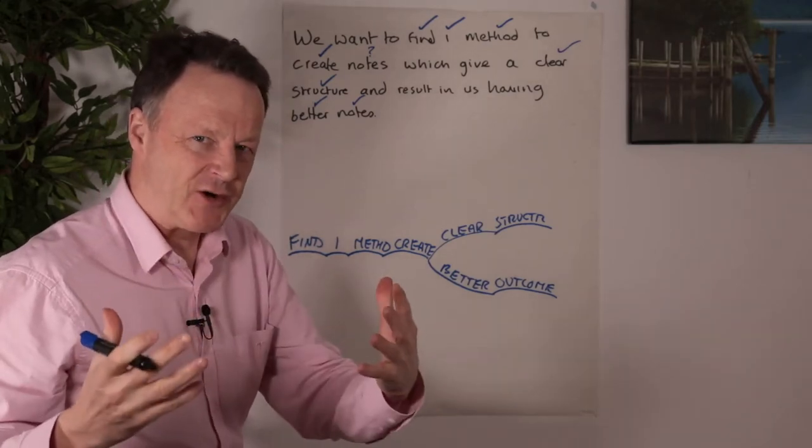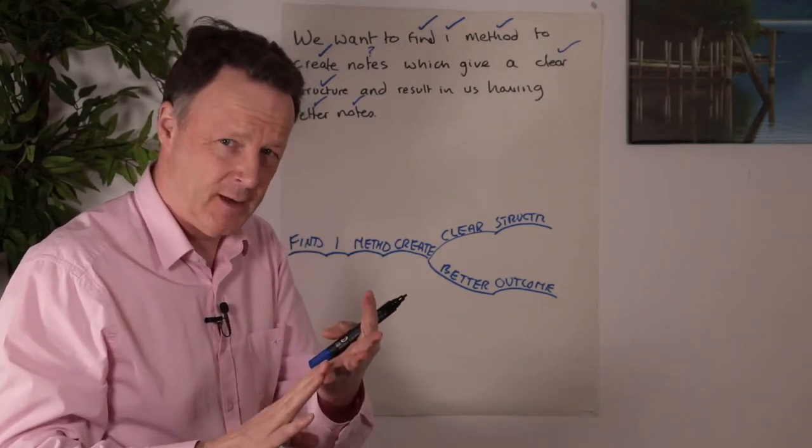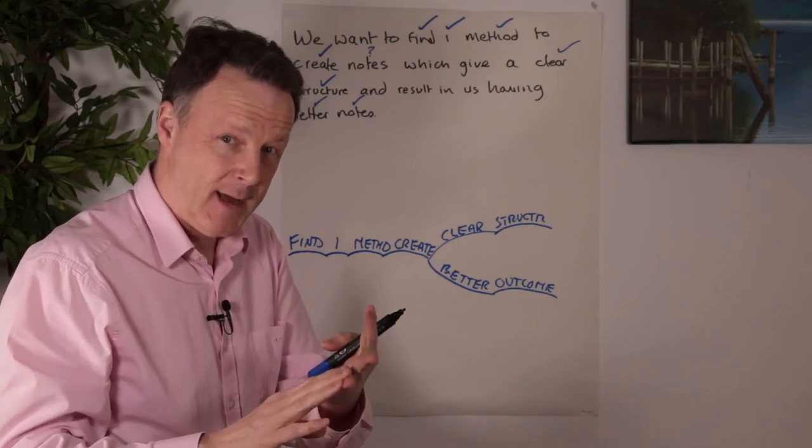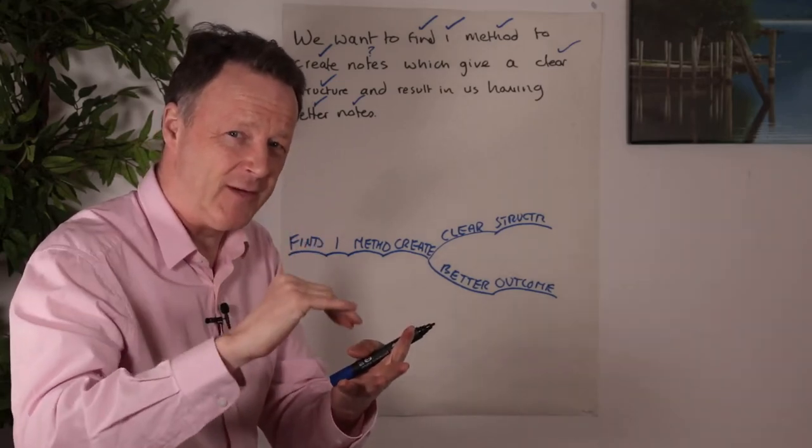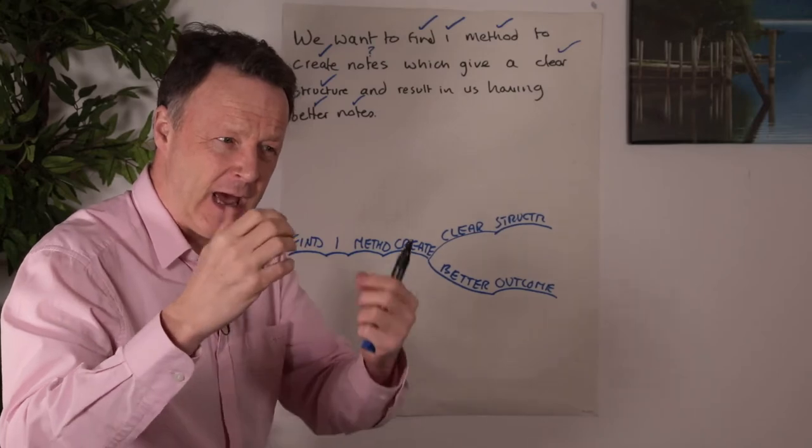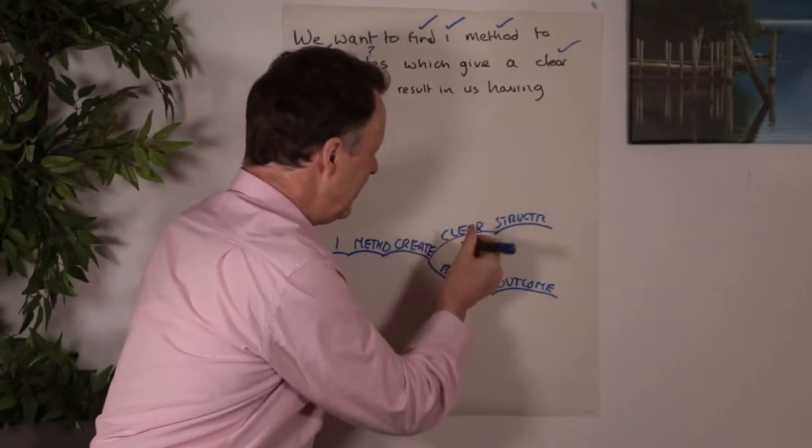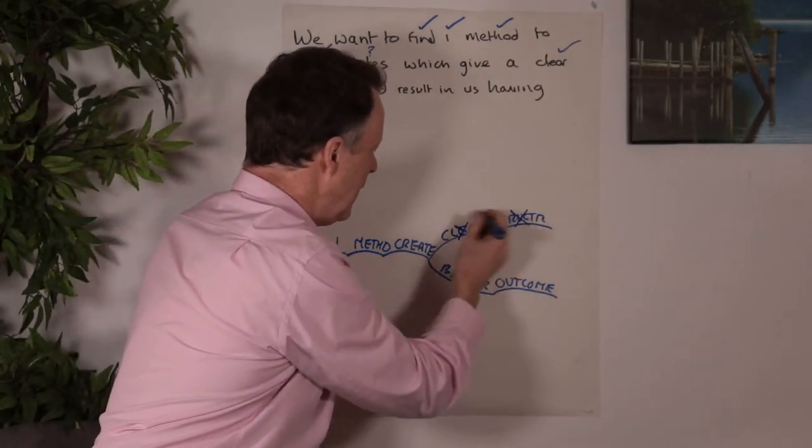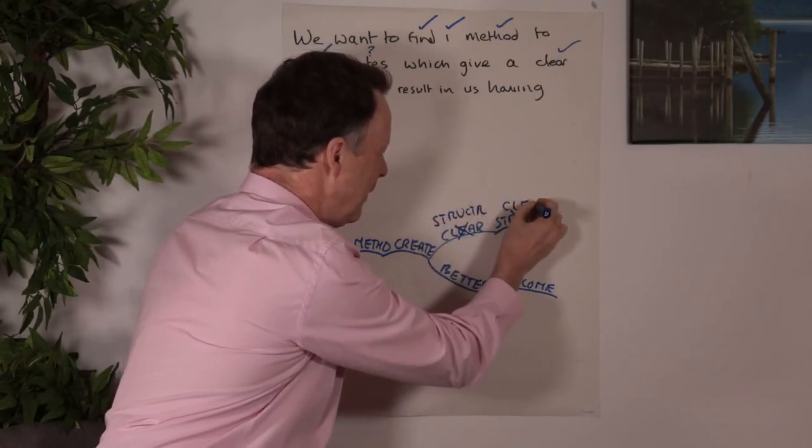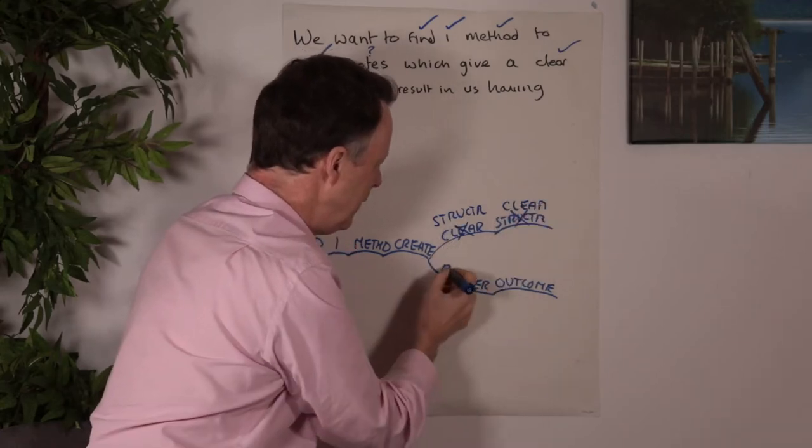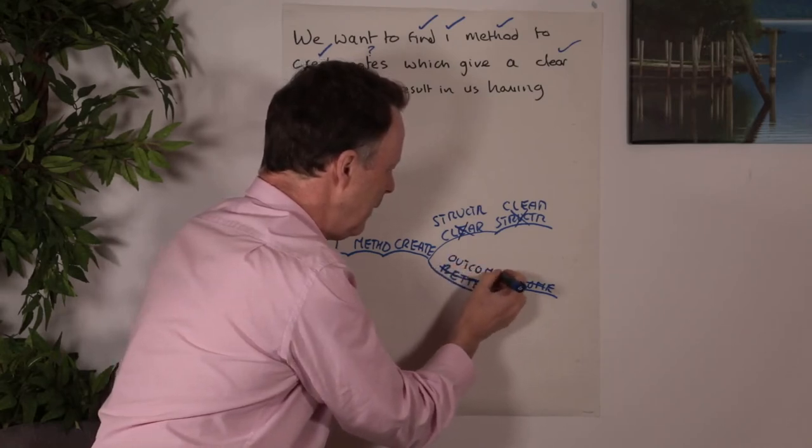Now this is where this restructuring comes in because particularly in the English language and a number of other languages, we put descriptive words before keywords. Now what I do in reality in my head, I quickly switch the two to bring the keyword up front and see if that gives me more value. Particularly if it helps me to generate more ideas or ask better quality questions. So in reality, what I would have done, I wouldn't have done this. I would have gone structure, clear, because structure is the key word. And I would have switched this as well, I would have gone outcomes, better.